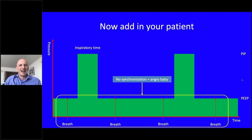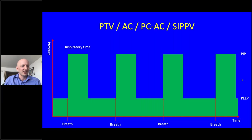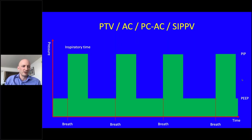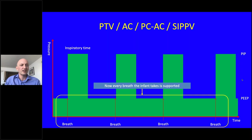Adding PTV, AC, PCAC, or SIPPV: the ventilator cycles stay the same but are synchronised to when the baby breathes in. If the backup rate is set at 40 and the baby breathes at 60, more cycles are added so each breath in triggers a ventilator cycle. The baby feels supported, everyone is happy, and you can reduce sedation.